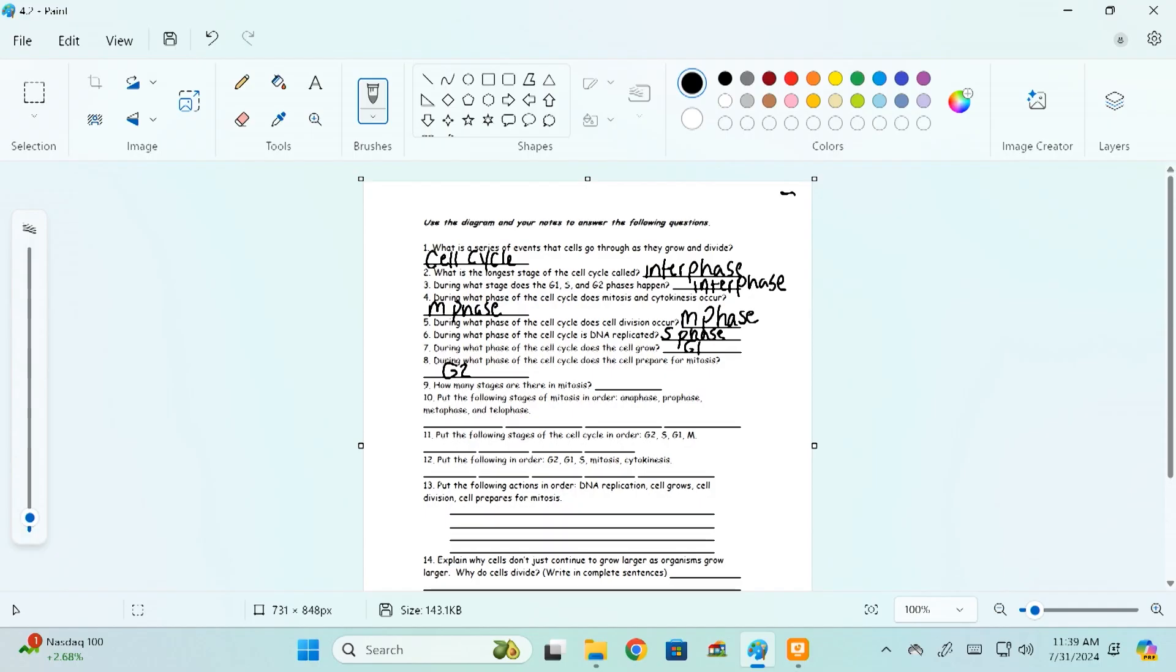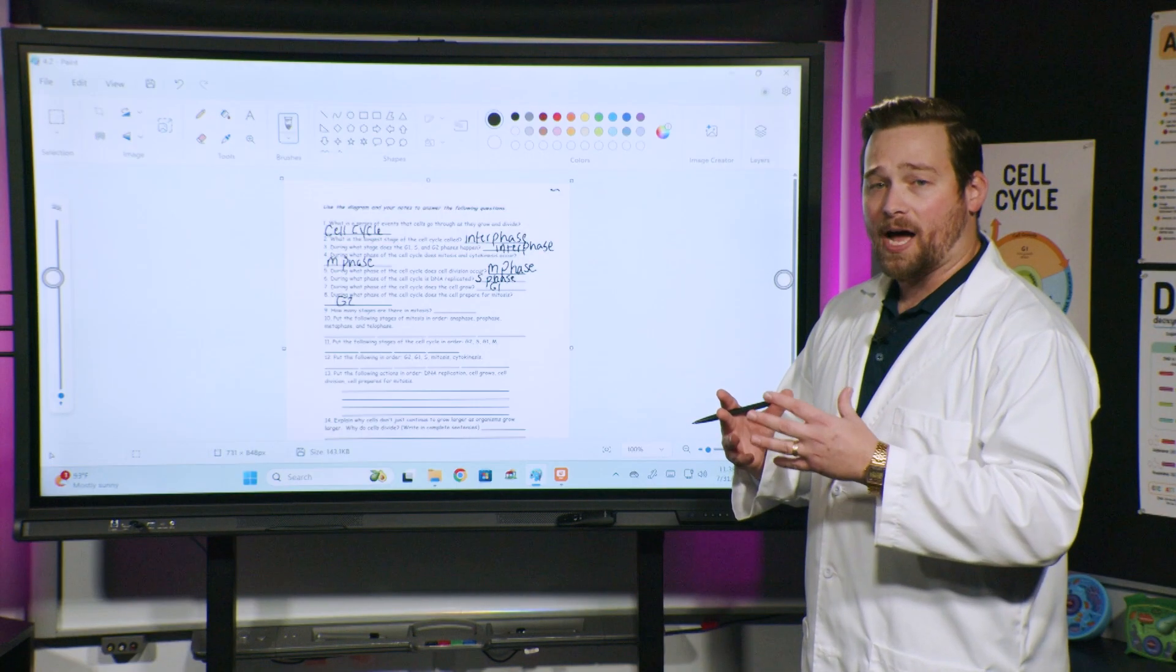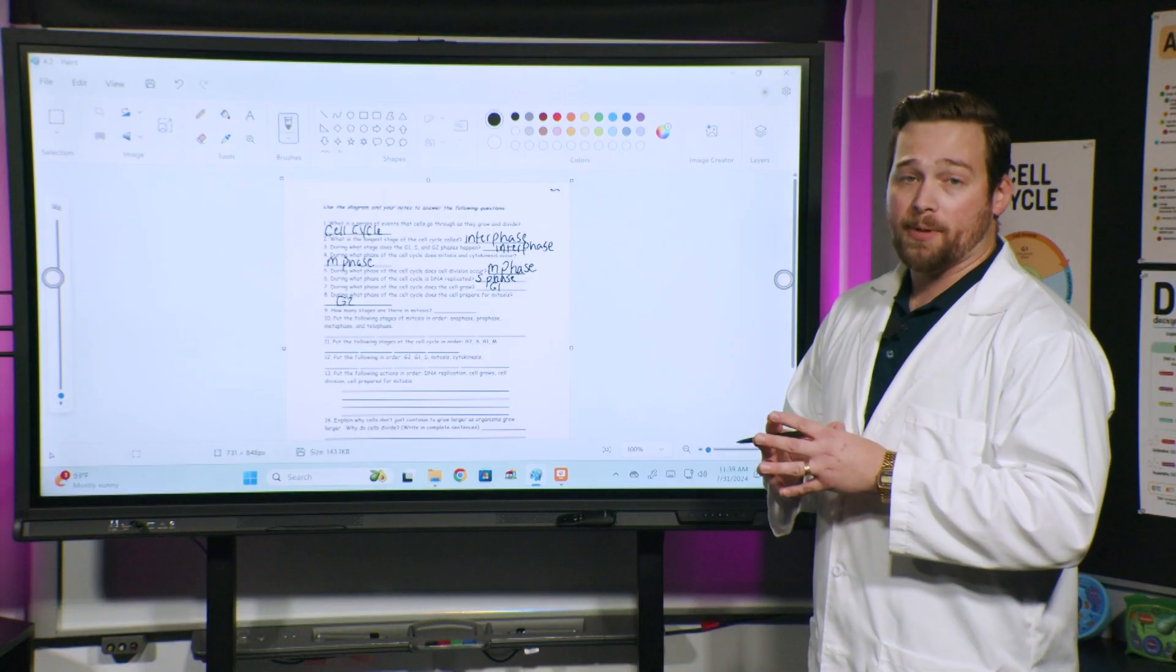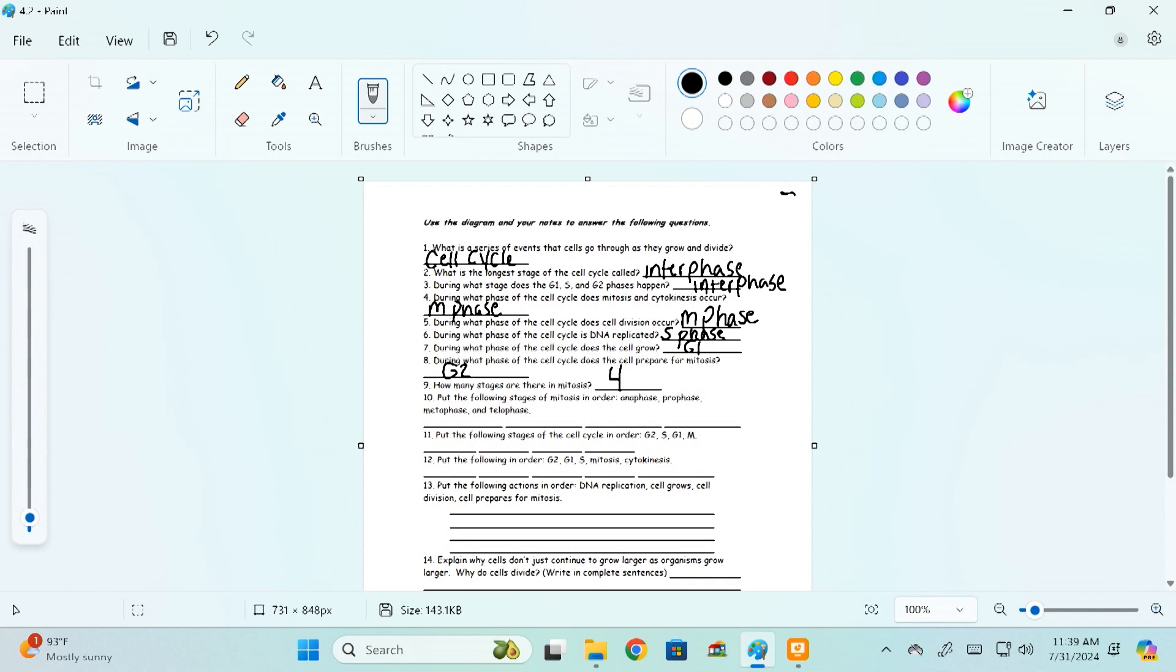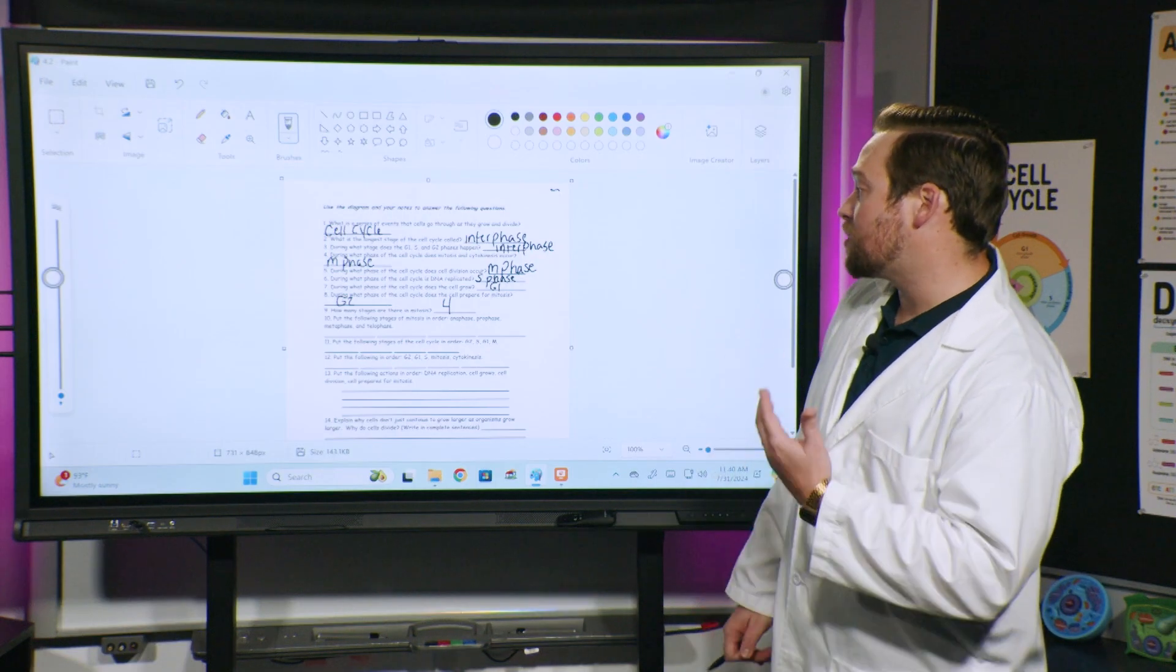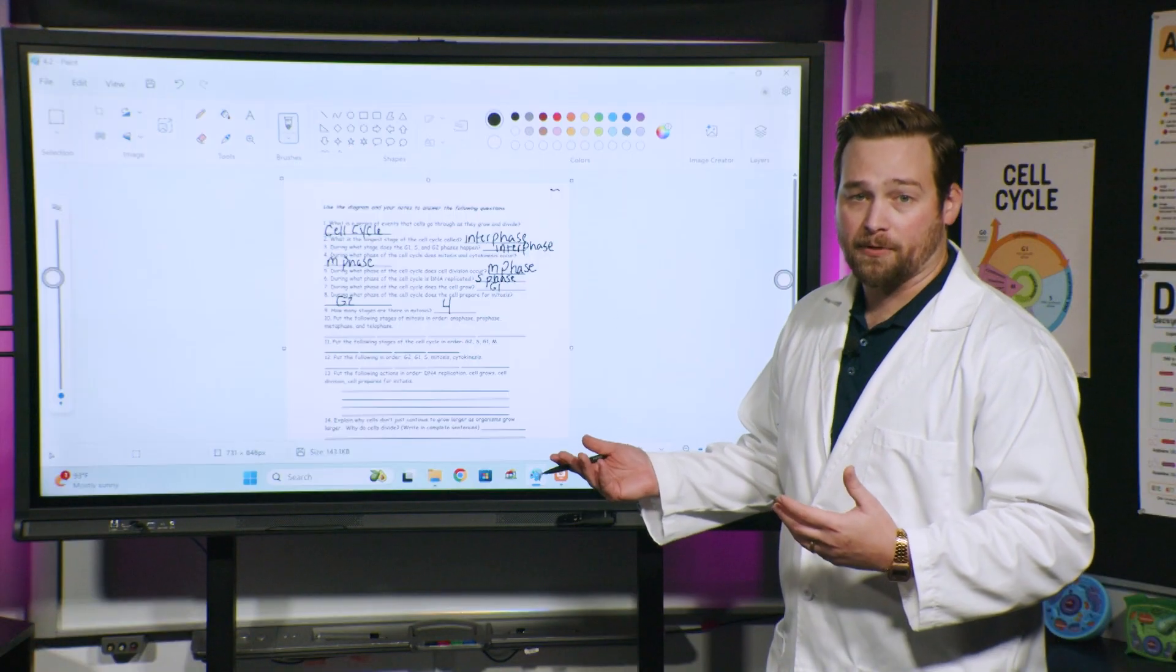All right, here's the next one, number nine. How many stages are there in mitosis? So you might want to think back to that coloring sheet we did last time. Mitosis is when the nucleus is dividing. It's broken up into a couple of different steps. Does anyone remember how many there are? There are four stages to mitosis. And even if you couldn't remember that one, I bet this next question was kind of helpful. This says, put the following stages of mitosis in order. And then it gives us the four different stages.